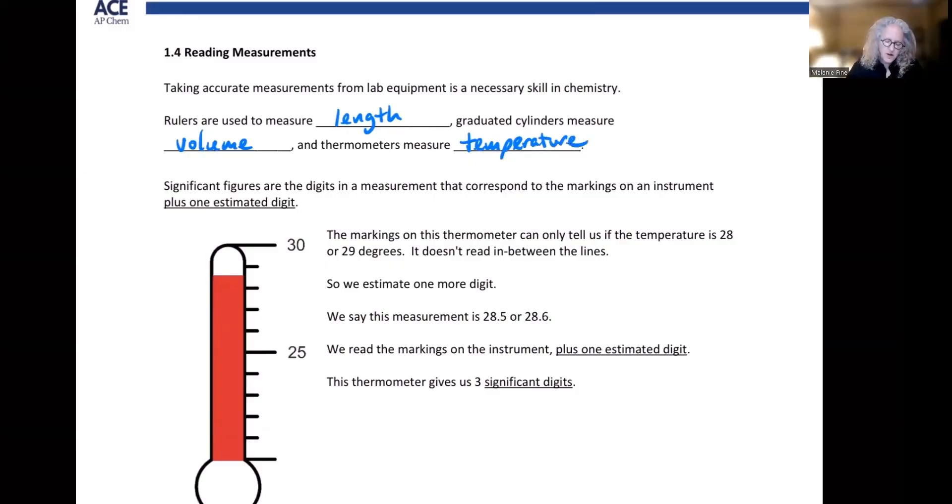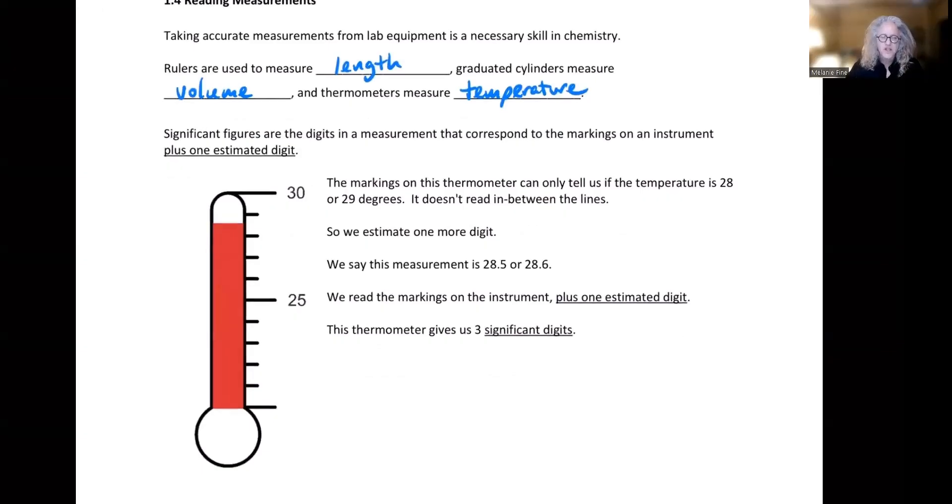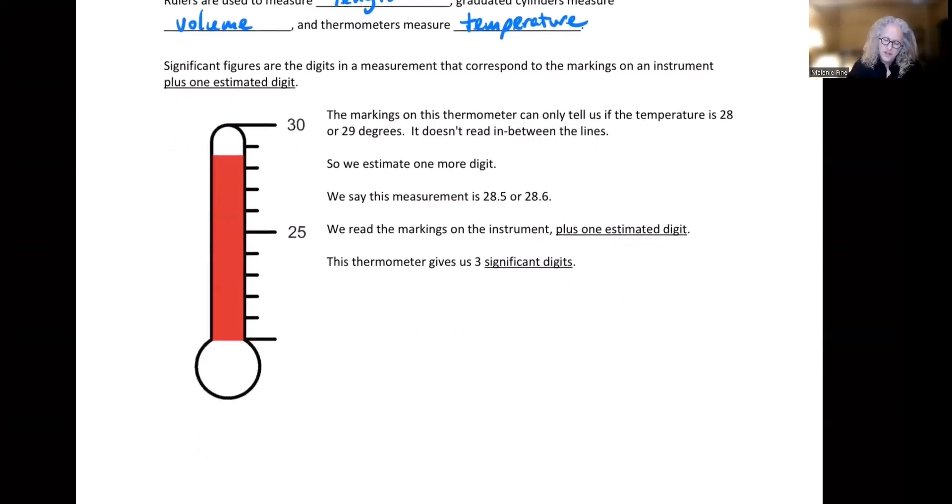Significant figures are the digits in a measurement that correspond to the markings on an instrument plus one estimated digit. The markings on this thermometer can only tell us if the temperature is 28 or 29 degrees, right? Each of these is one degree.